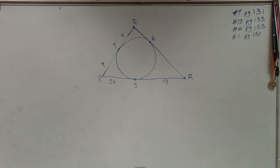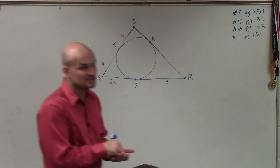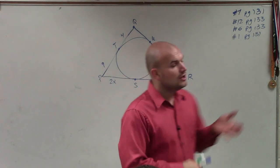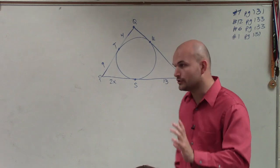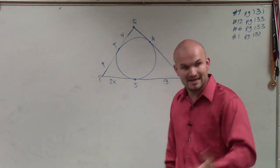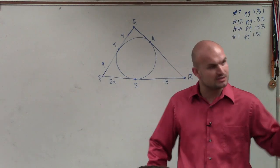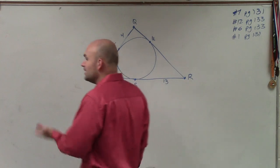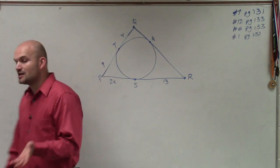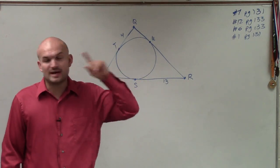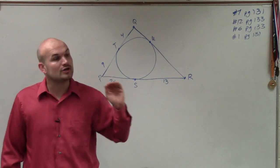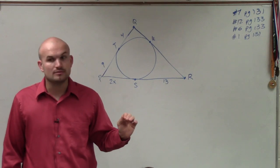So in this case, the other thing that we talked about for this homework was: if a line is tangent to a circle, we know that it goes through one point and it is 90 degrees. Everybody should have that written down somewhere in the notes. The other thing we talked about is if we have two lines that are tangent that go through a point, they are congruent.